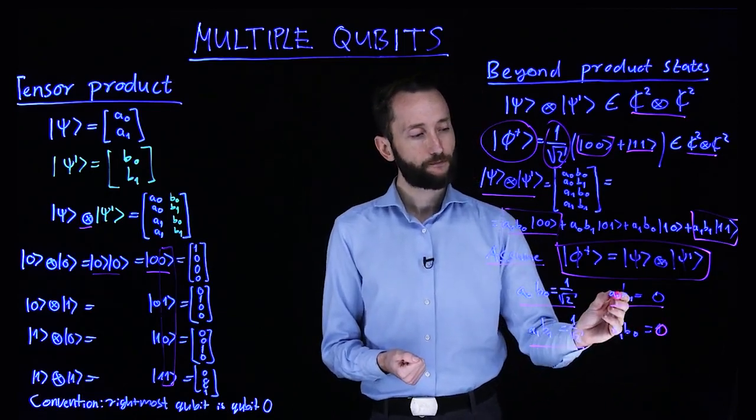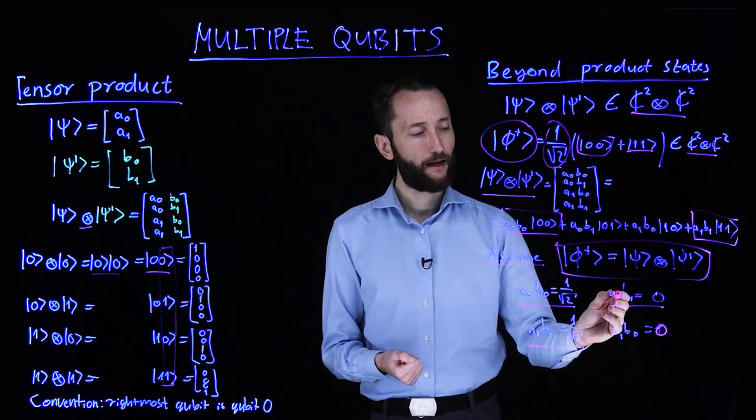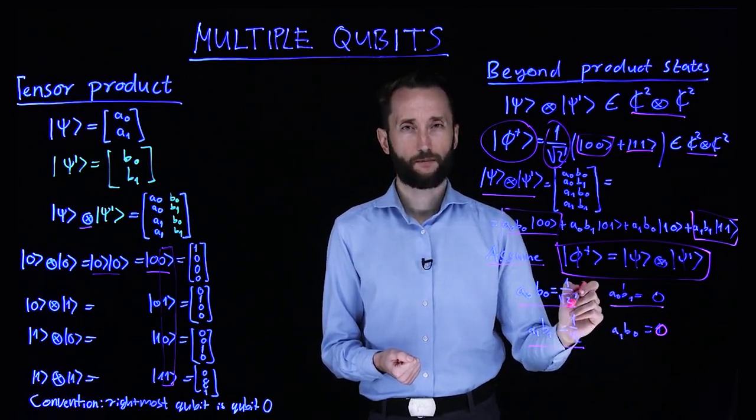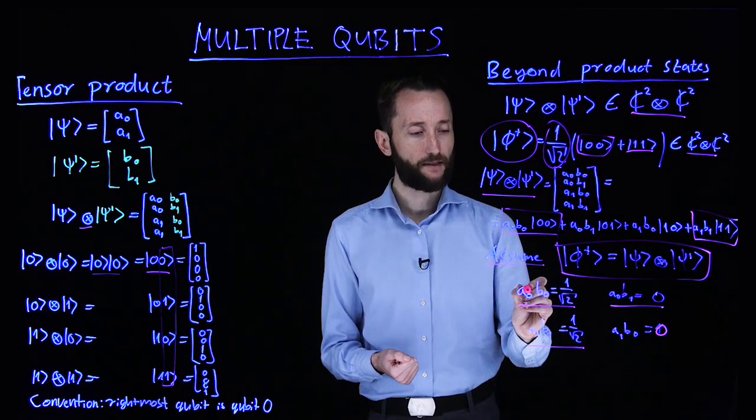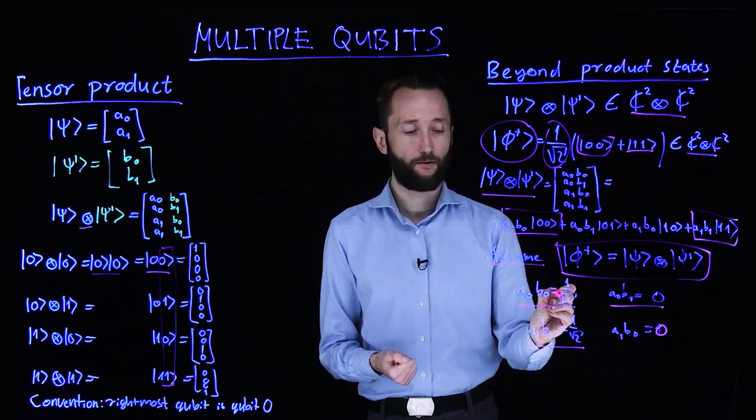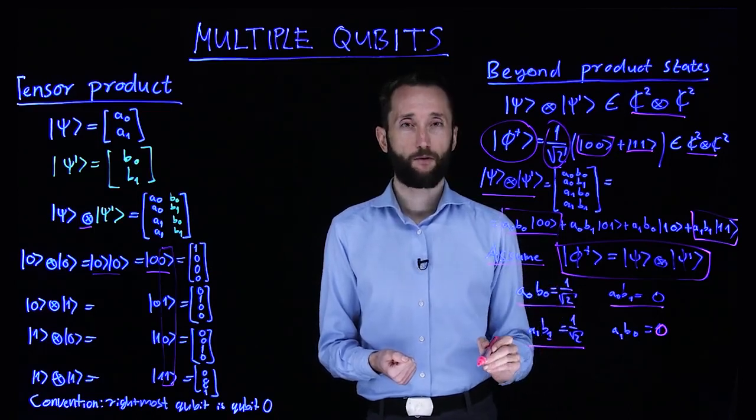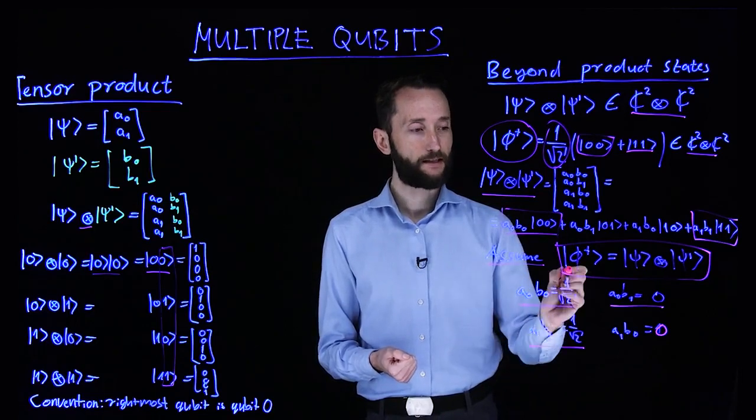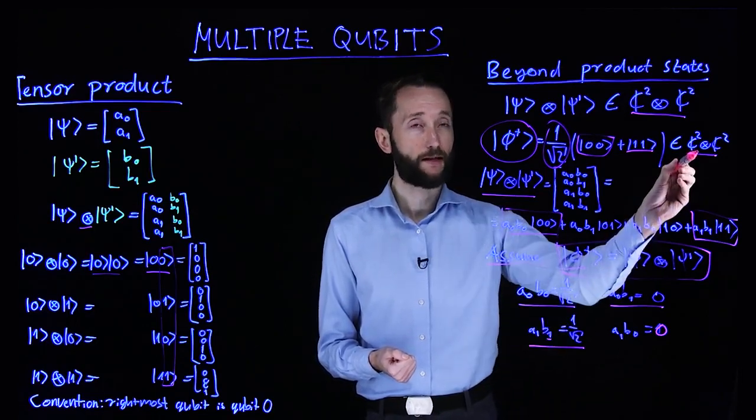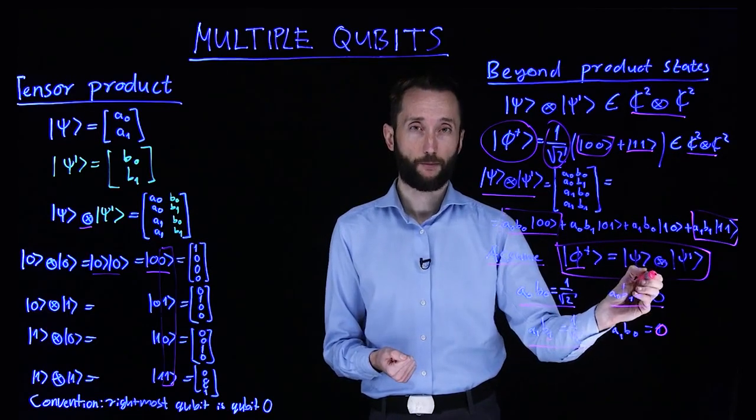But now, it means that either a0 or b1 must be 0. a0 cannot be 0 because it multiplies to some non-zero value. But the same is true for b1. So therefore, this state, although it lives in the same space, cannot be written as a product state.